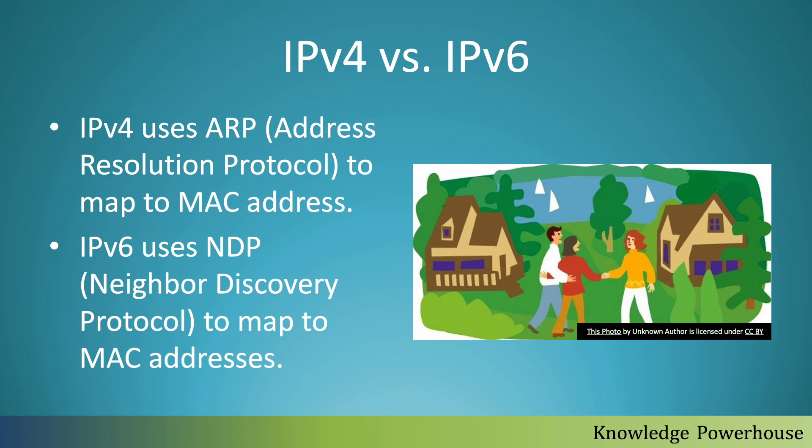IPv4 uses ARP — address resolution protocol — to map to MAC addresses. MAC addresses are at the link layer or physical layer, while IP operates at the network layer. IPv6 uses NDP — neighbor discovery protocol — to map to MAC addresses.